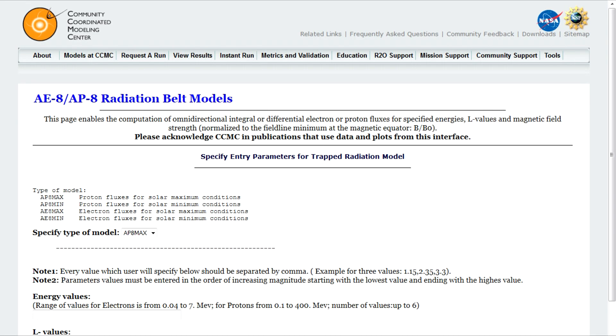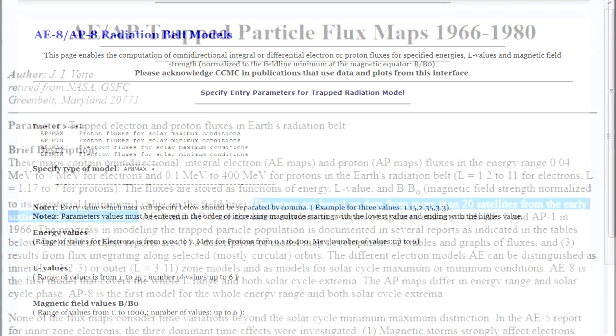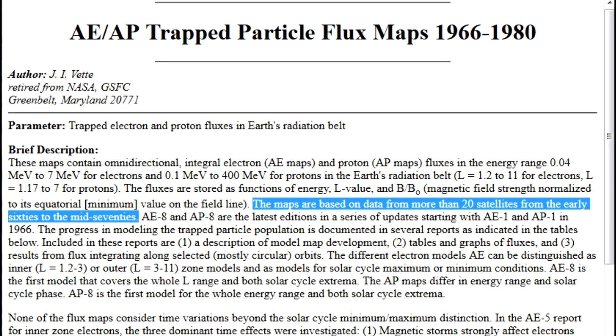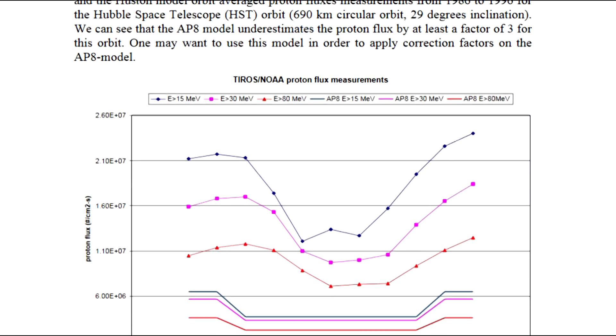And of course, the AP-8 is based on averages of satellite proton flux data, data derived from over 20 satellites between the mid-1960s and early 1970s. I even used correction factors that were established for much later satellite observations.